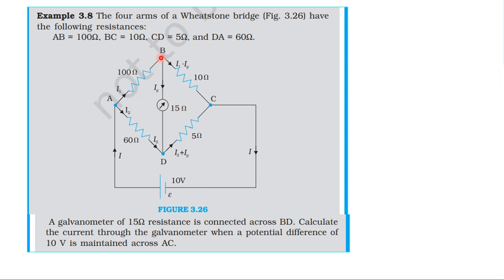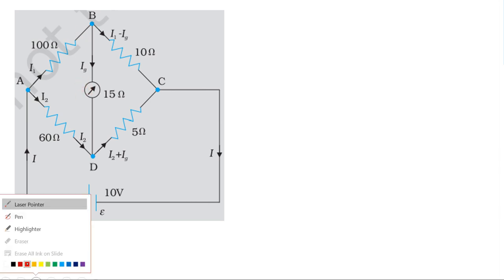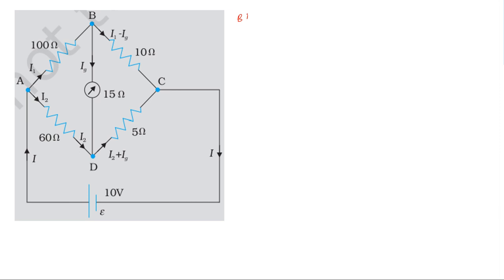For the loop rule: loop BD-AB. Applying Kirchhoff's second law — the sum of EMFs equals the sum of potential differences. We apply this to the loop BD-AB and the loop BD-CB, writing the voltage equation for each loop.